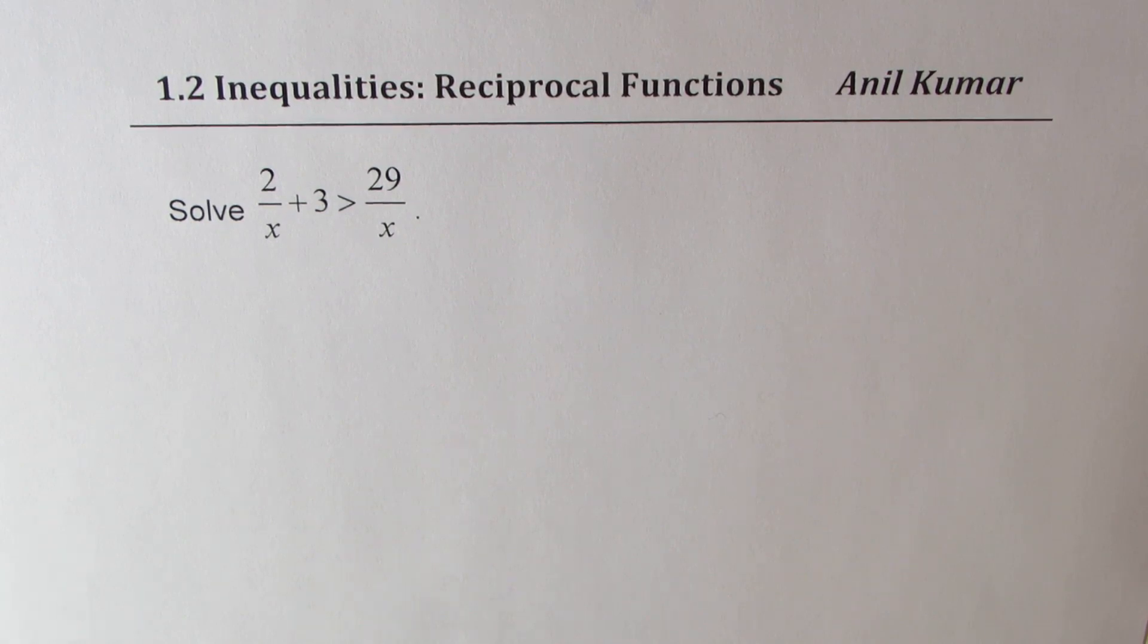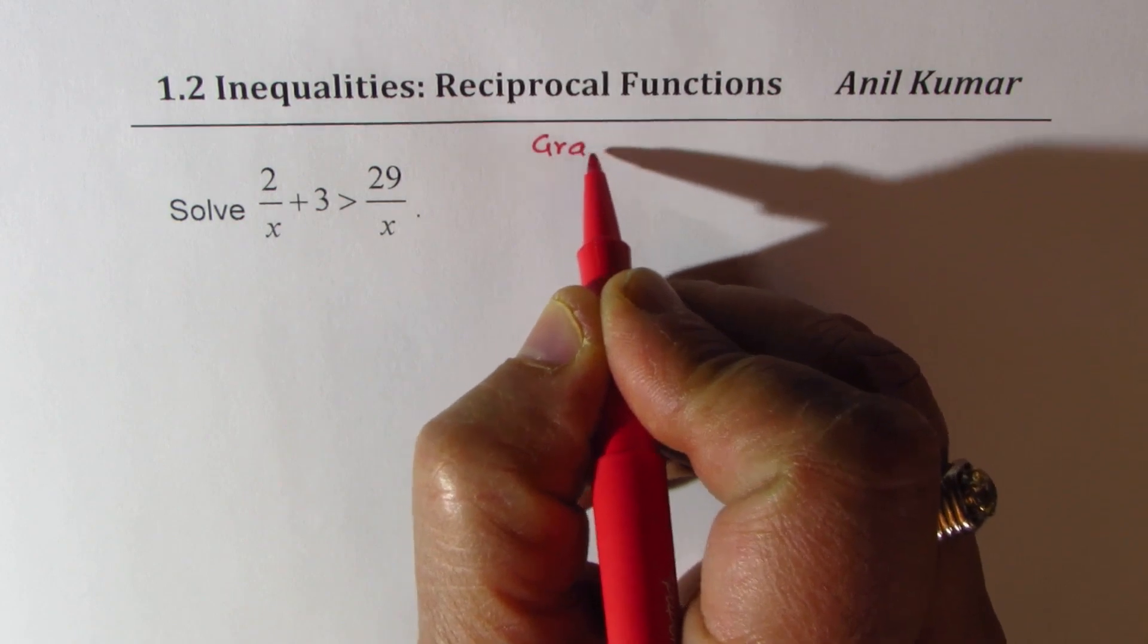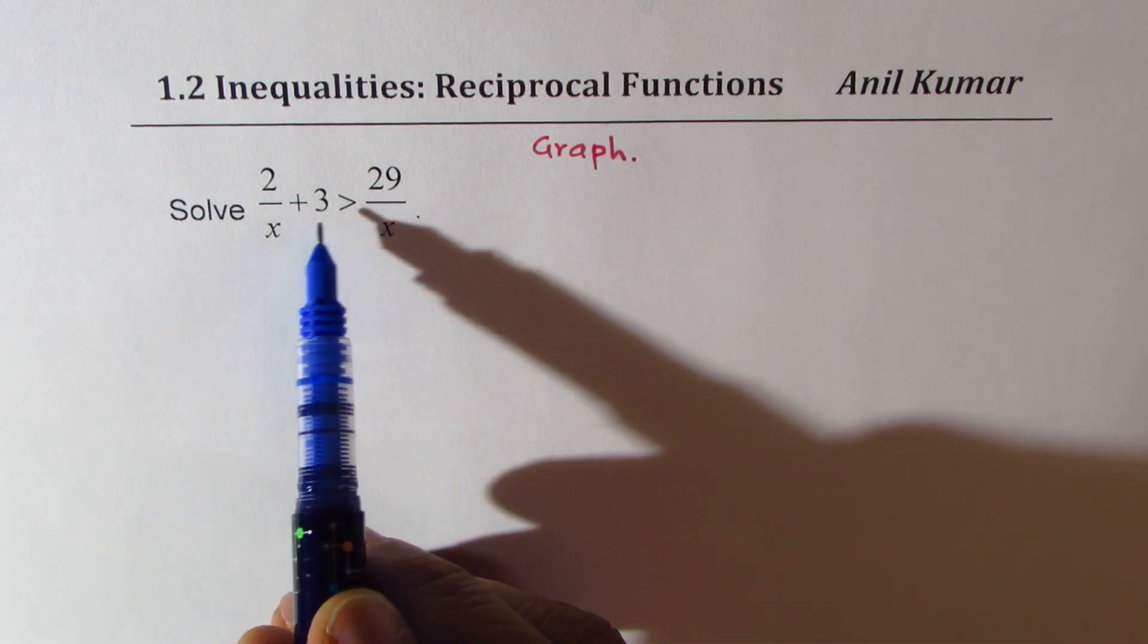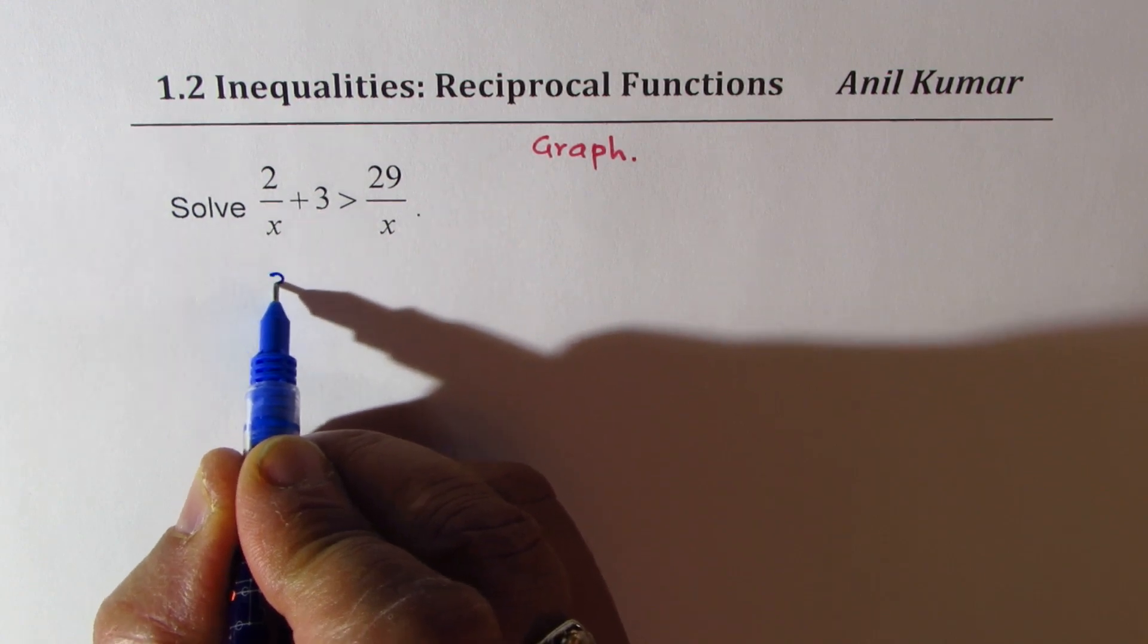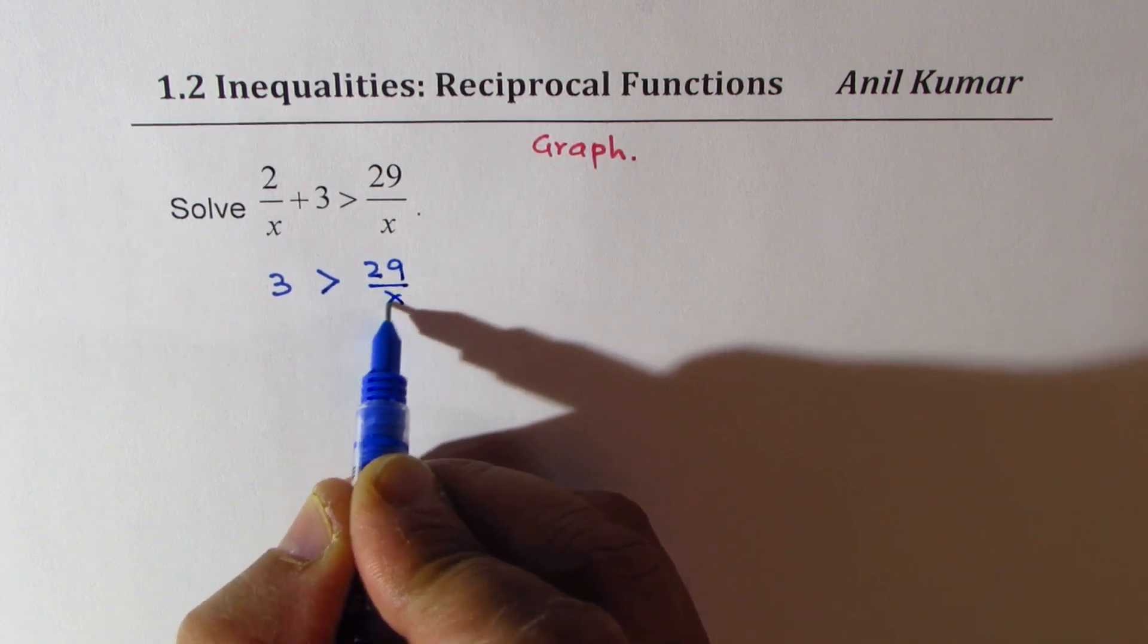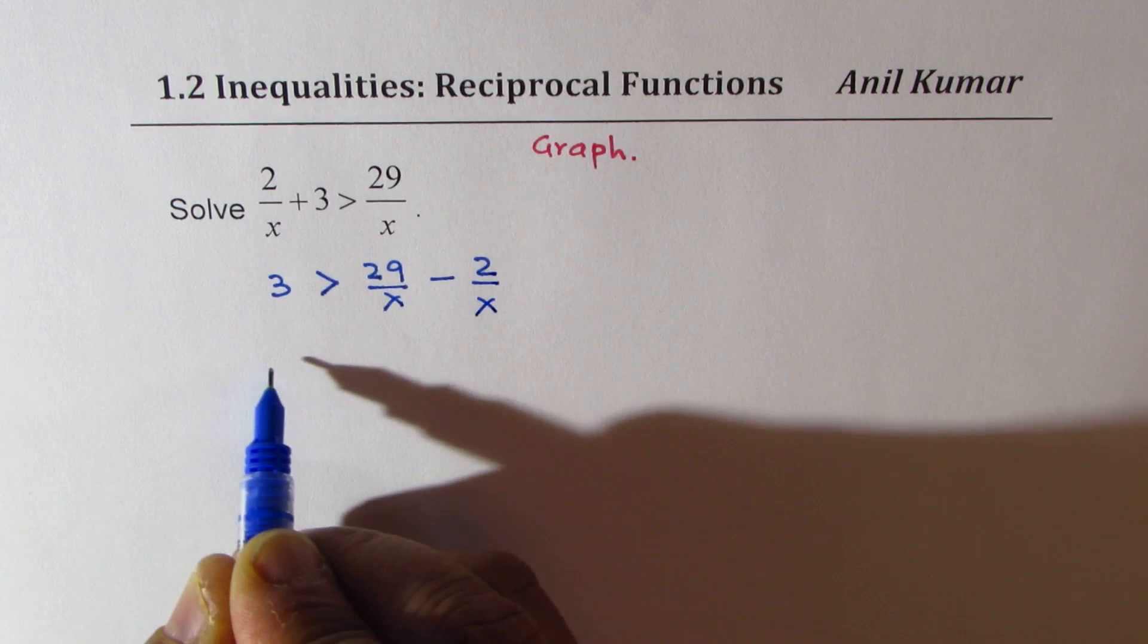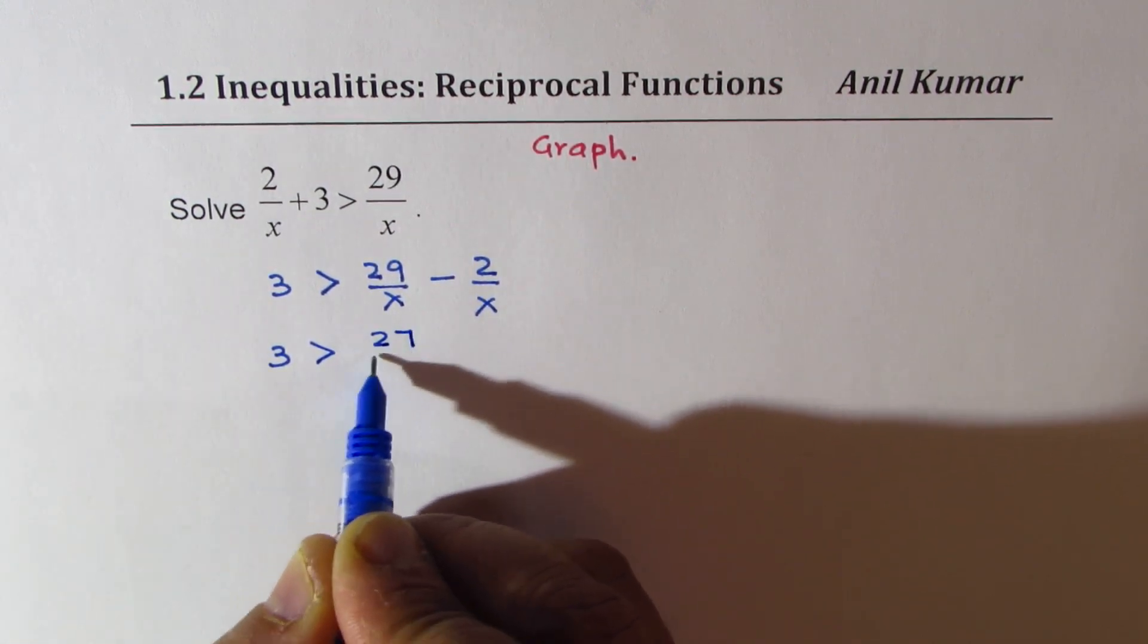I'll show you two different ways of doing it. The first method will use a graph. To plot the graph, I'll take the constant terms on one side. So leaving 3 here, we could write our inequality as 3 > 29/x - 2/x. And that is 3 > 27/x.